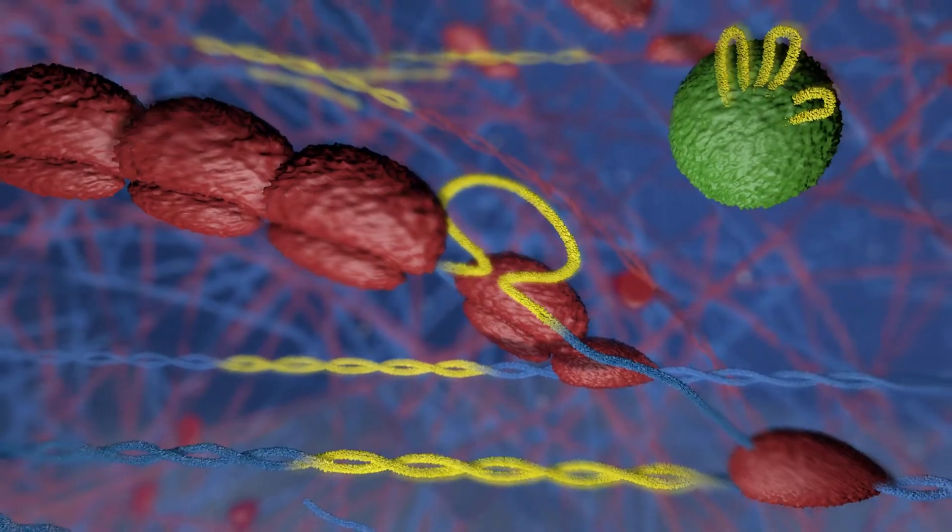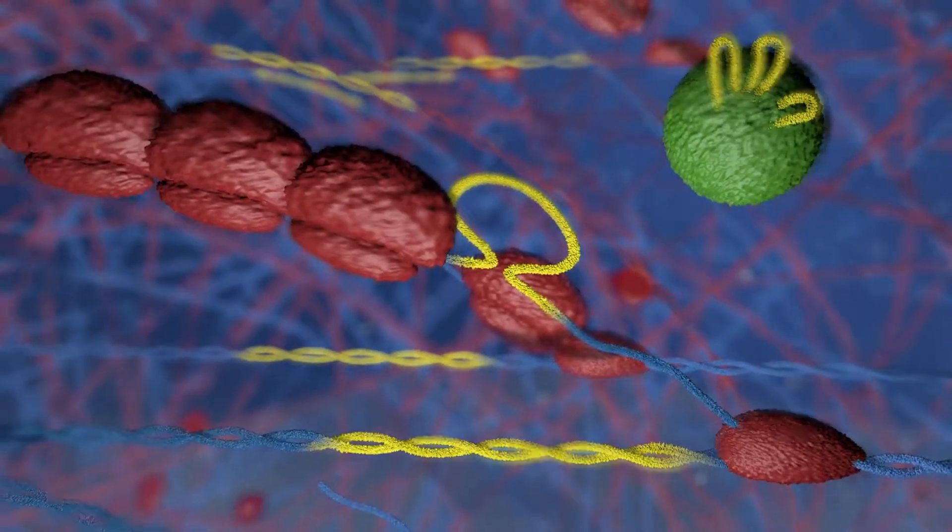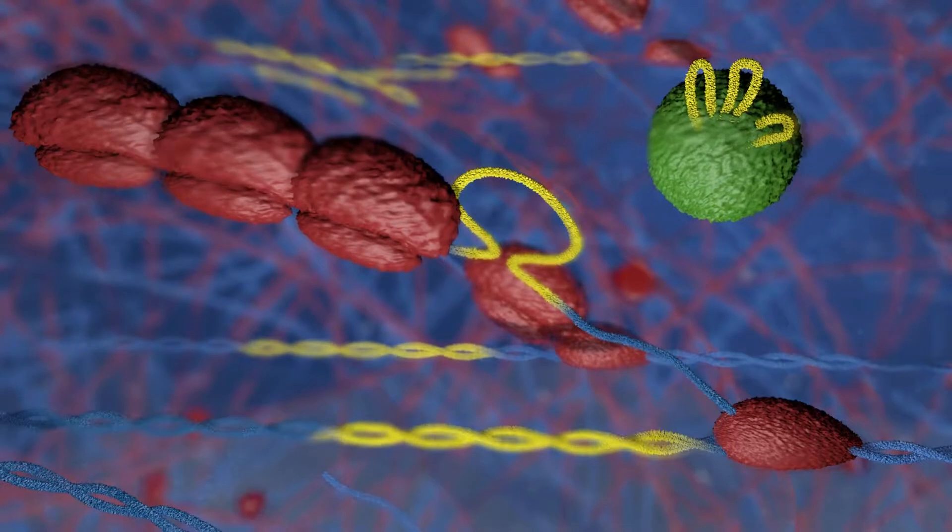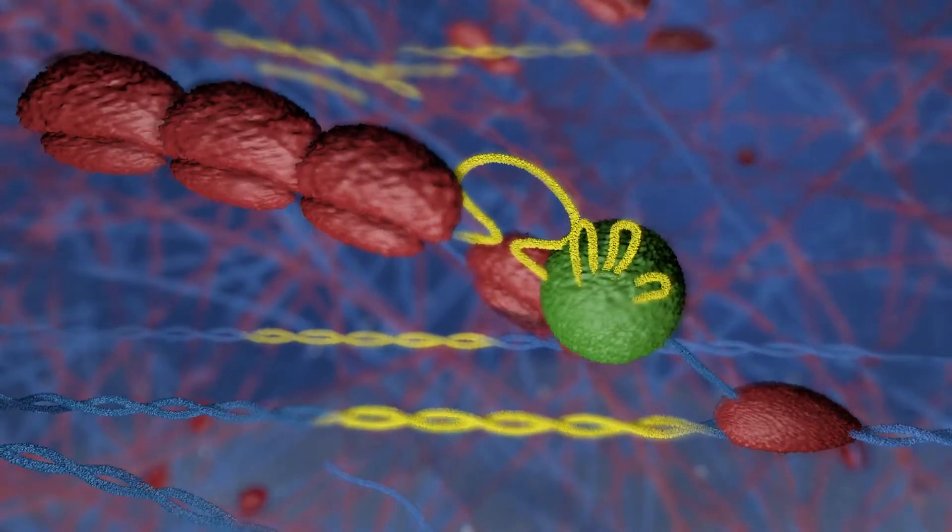Impaired gene expression at many loci in the nascent eukaryote effectively dooms it to extinction unless a solution is found to the splicing problem.